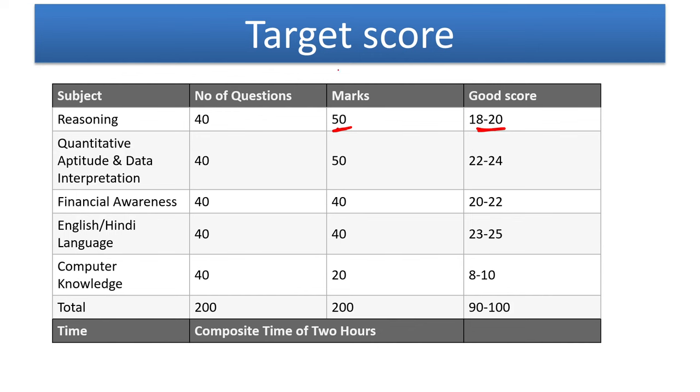If you are trying to score, let's say, 30-40 marks out of 50 with a lot of negative attempts, then students, they get like 2-3-4 marks and they end up failing the exam. Their sectional is not even covered. So 18 to 20 is a good score. 18-20 is a very good score.